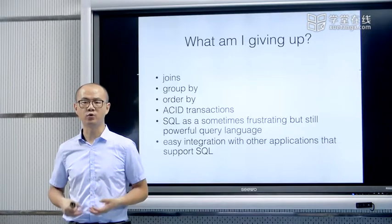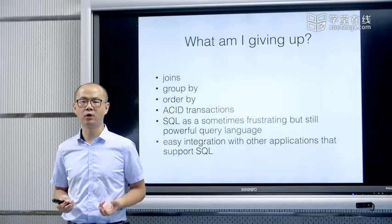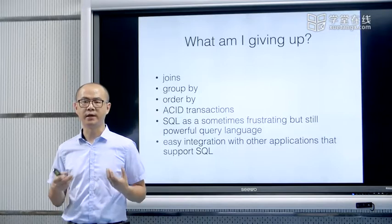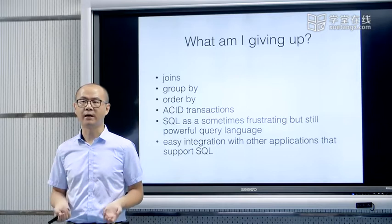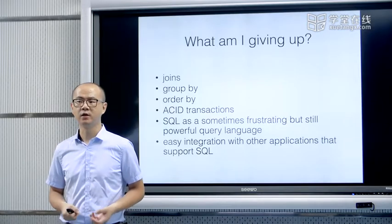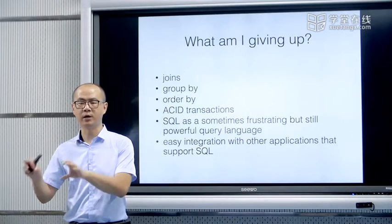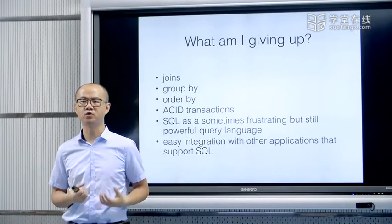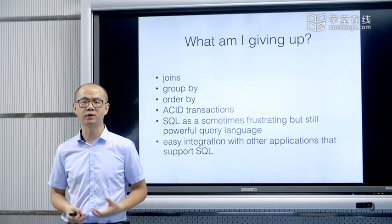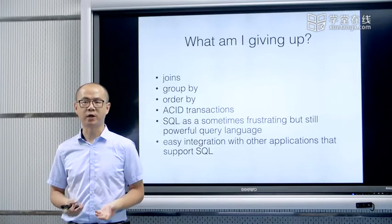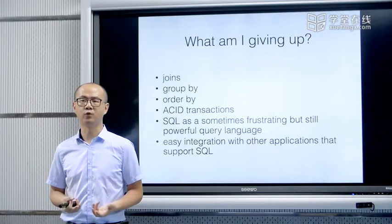那么NoSQL有了刚才说的这些优点，到底哪些缺点是它目前还没有办法克服的？使用NoSQL作为数据仓库数据平台之后，有哪些操作是我们不能达到的？首先，我们不能做关系数据库里面表格与表格之间的join操作，因为它要求强schema的数据模型。我们不能做类似的group by和order by，它们也都要求表格之间进行关联和schema化的操作。